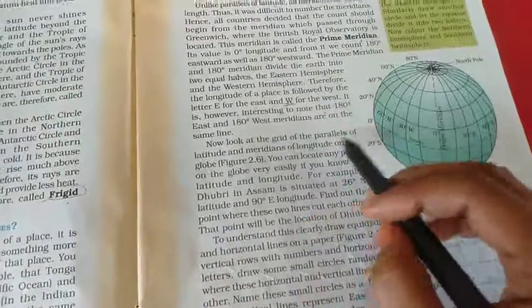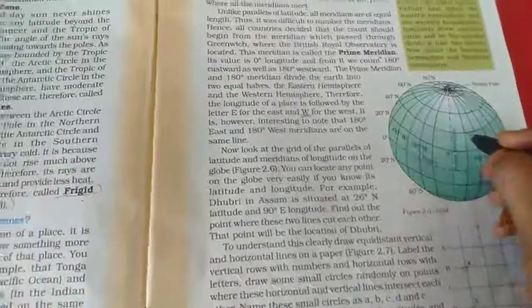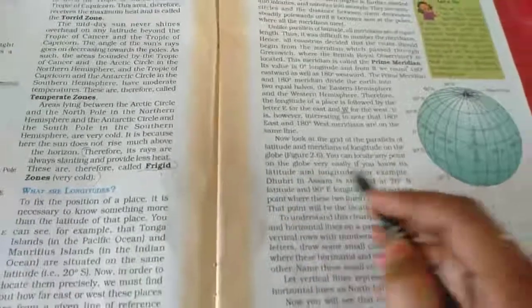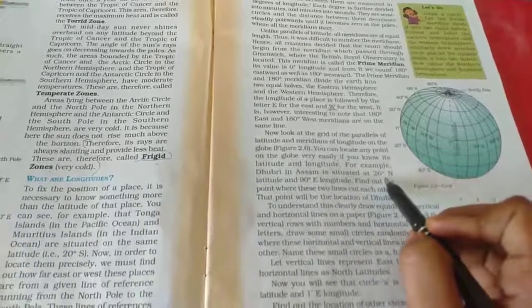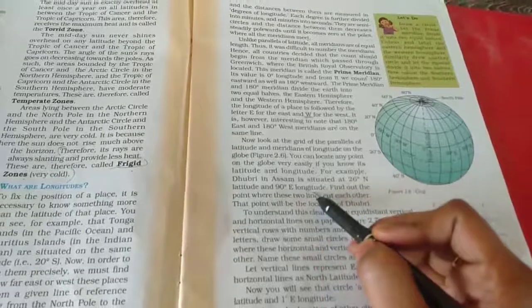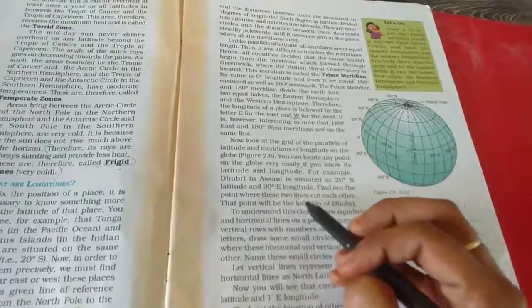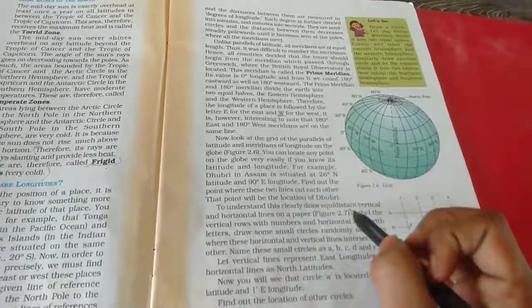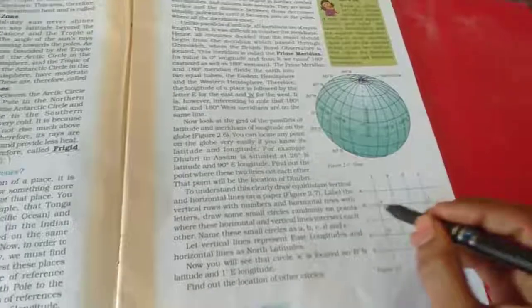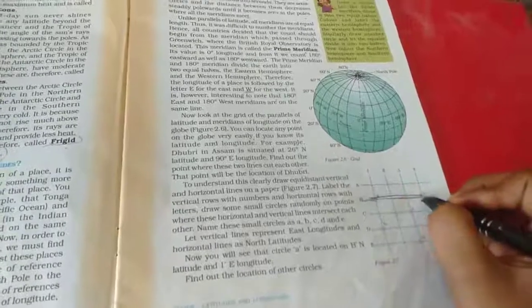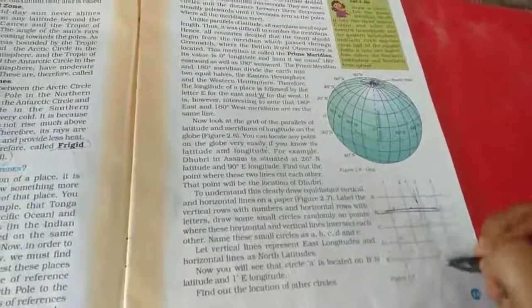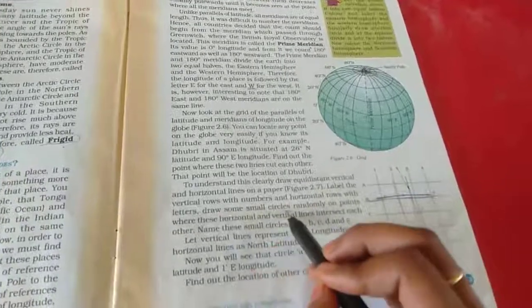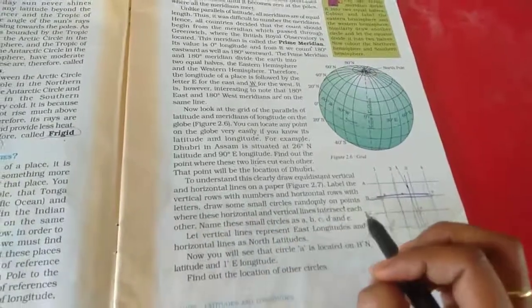Now look at the grid of the parallels of latitude and meridians of longitude. This is called latitude. This is called longitude. You can locate any point on the globe very easily if you know its latitude and longitude. For example, Dibrugarh in Assam is situated at 26 degrees north latitude and 90 degrees east longitude. Find out the point where these two lines cut each other. That point will be location of Dibrugarh. To understand this clearly, draw equidistant vertical and horizontal lines on a paper. Vertical means this one, horizontal means this one. Horizontal lines are called latitudes. Vertical lines are called longitudes.